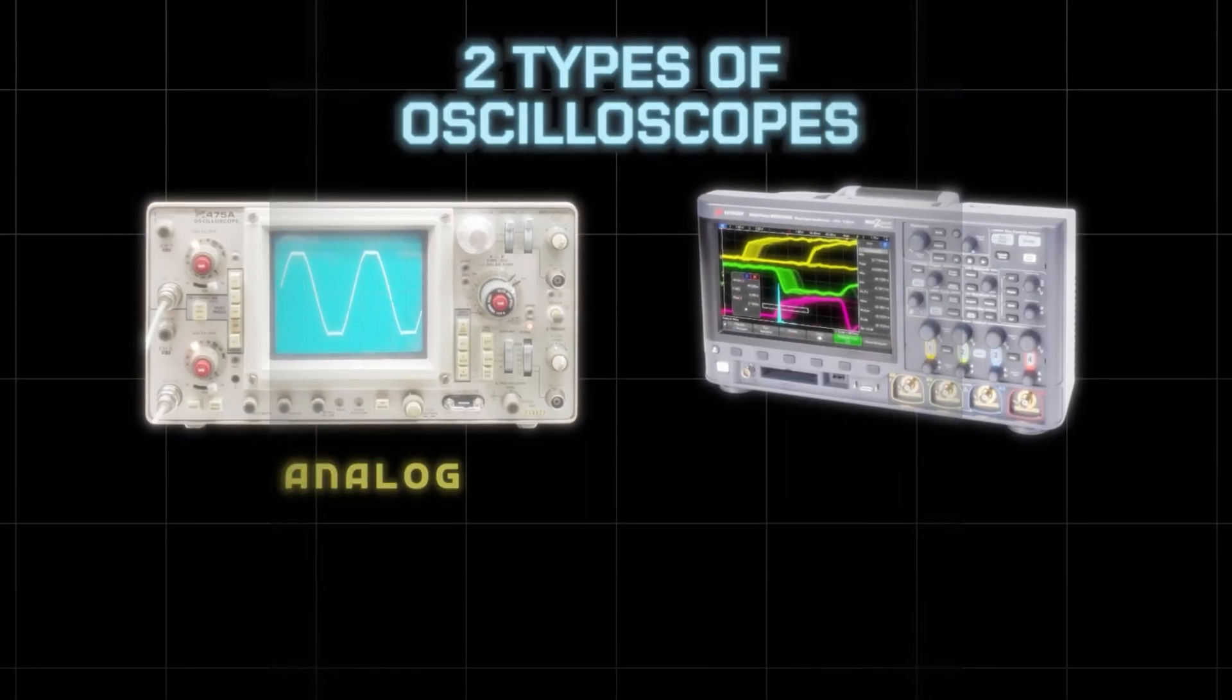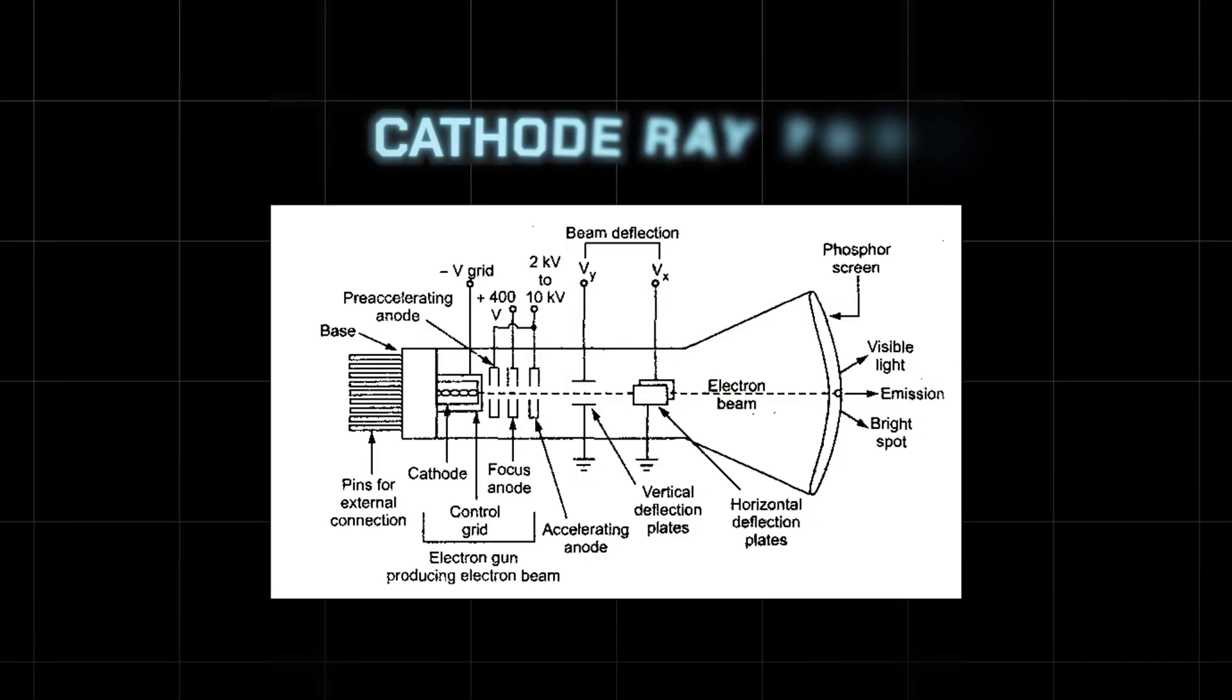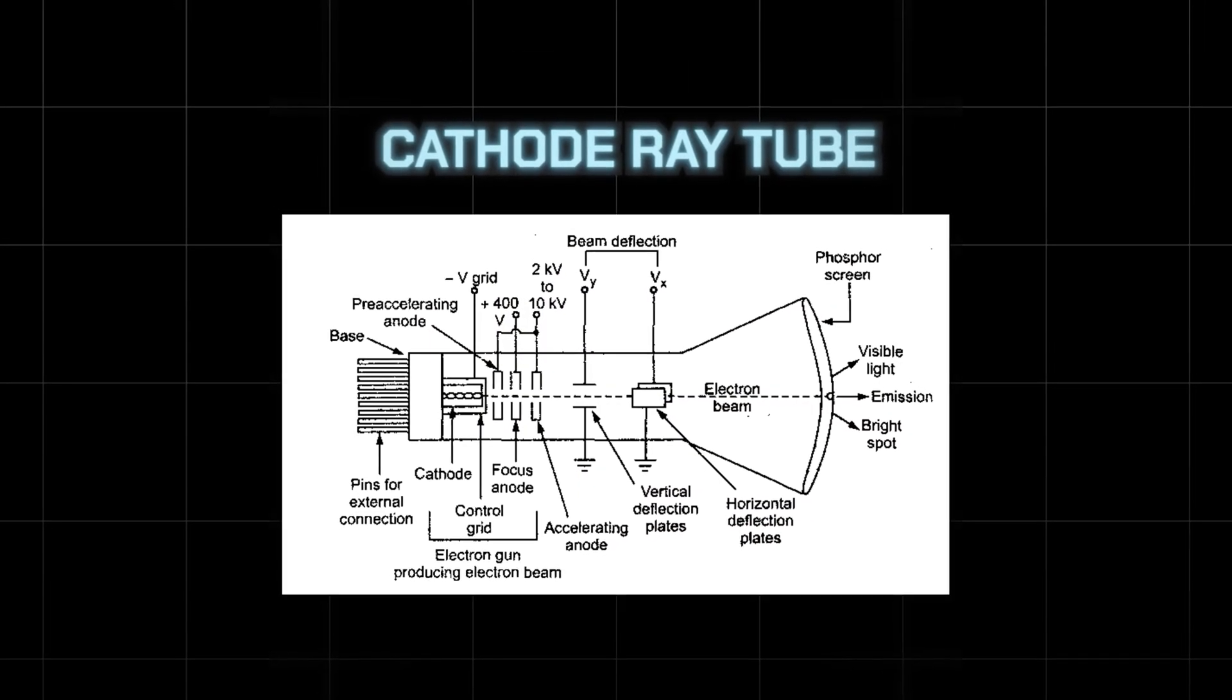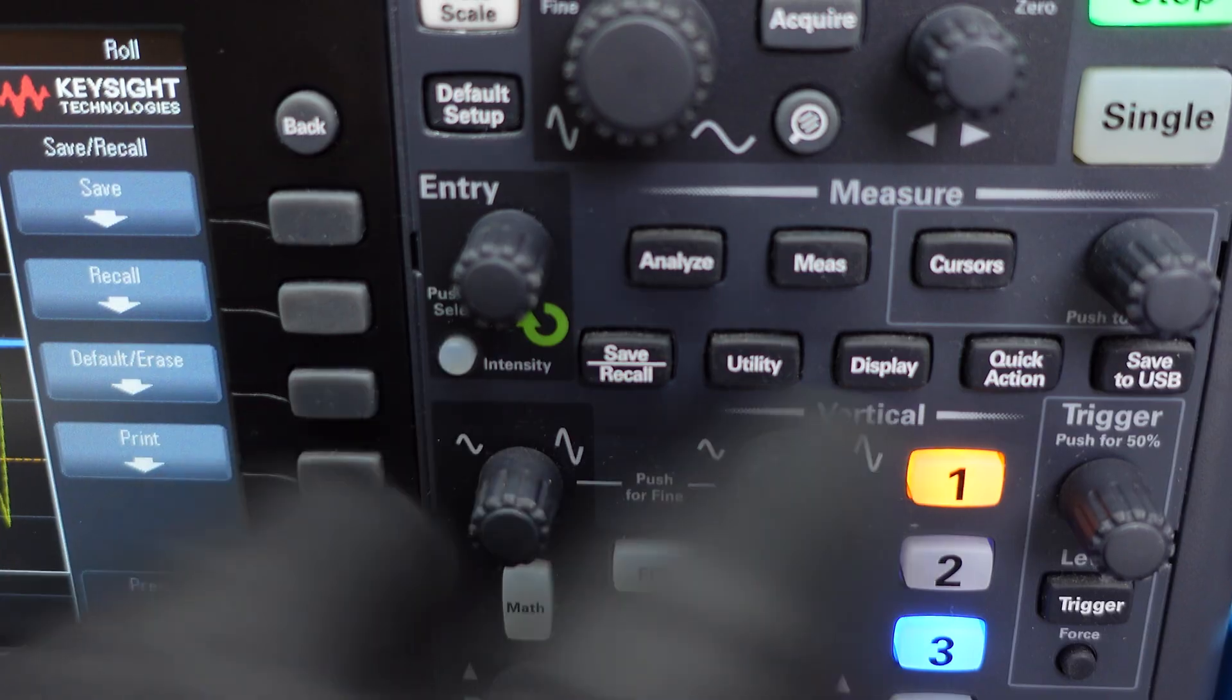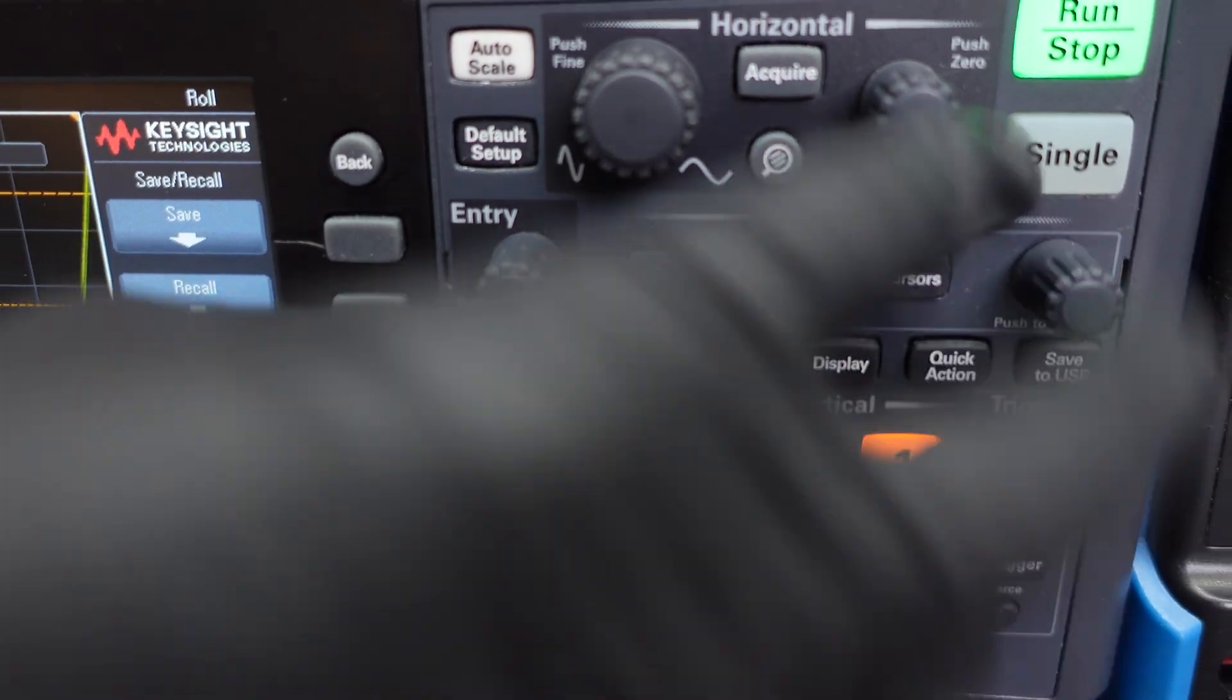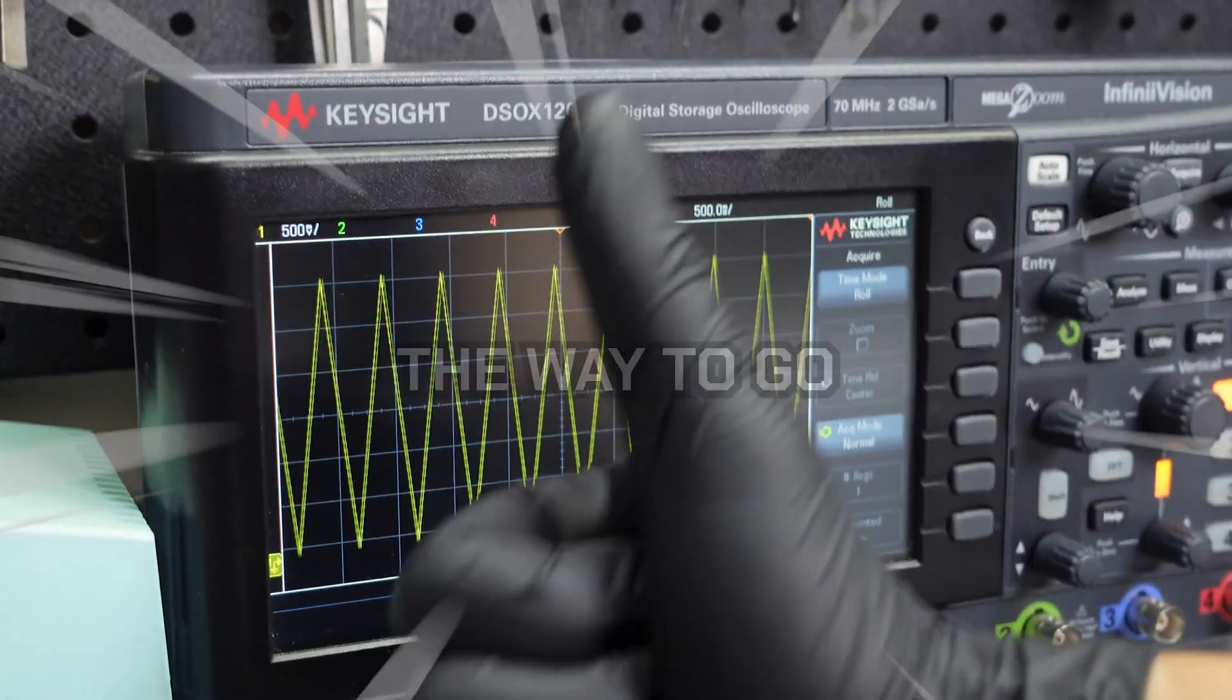There are two types of oscilloscopes, analog and digital. Analog oscilloscopes are the old school type. They use a cathode ray tube to physically draw waveforms on a screen. Pretty cool, but outdated and kind of bulky. Digital oscilloscopes are way more powerful with a bunch of functions. For 99% of people, a digital oscilloscope is the way to go.